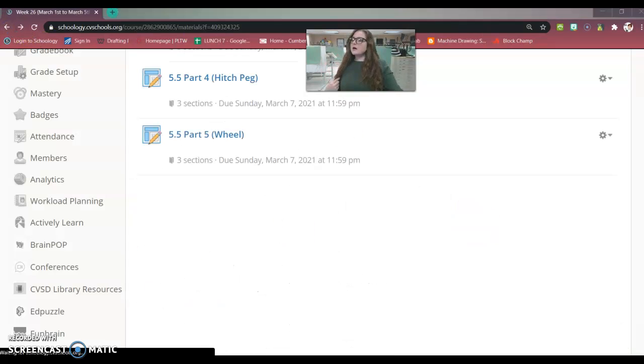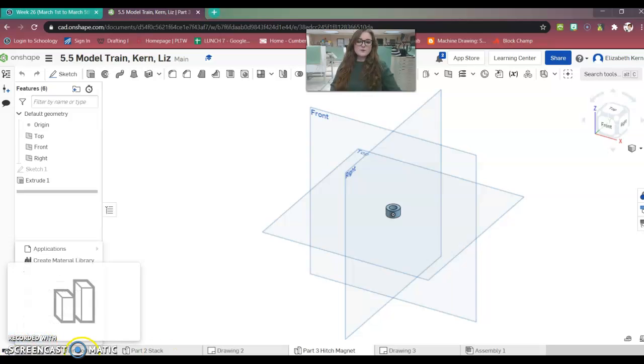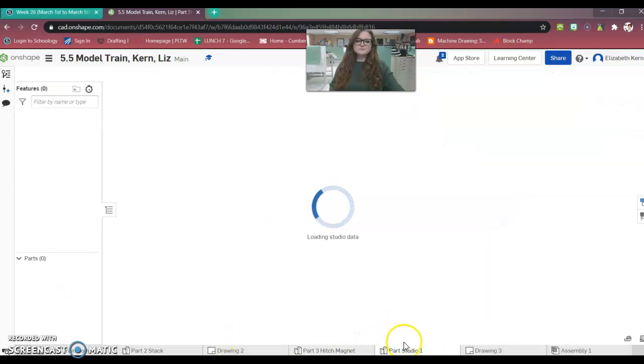Make sure when setting up your Onshape file, you create more parts. So we would already have our part one train body, but we need to create parts studio. I'm going to move it down because this will be rename part four.